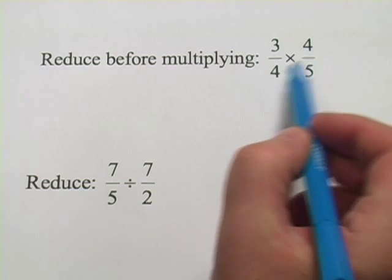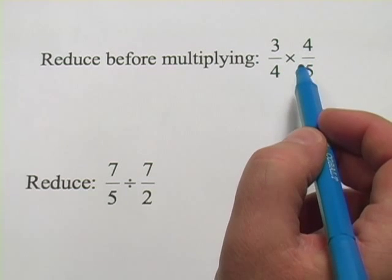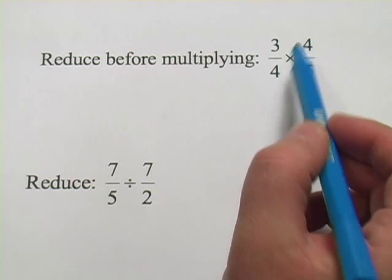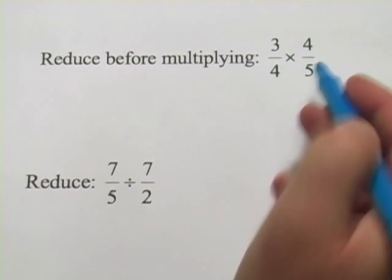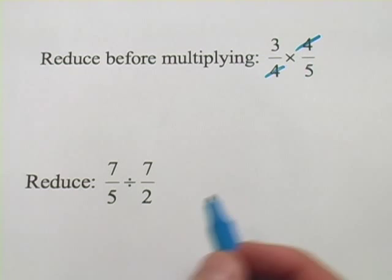But when two fractions are multiplied with each other, you can cancel. If there's something the same on the top as on the bottom, like we have a 4 up here and a 4 up here, boom, boom, they cancel.